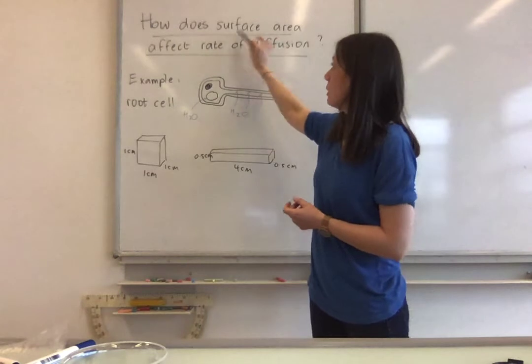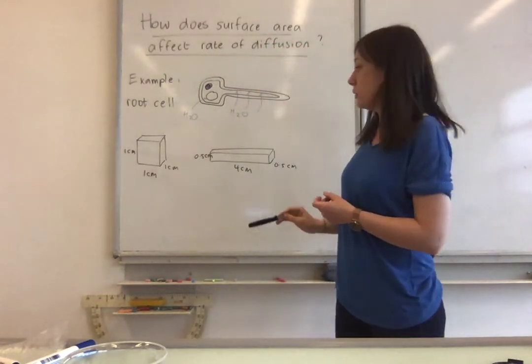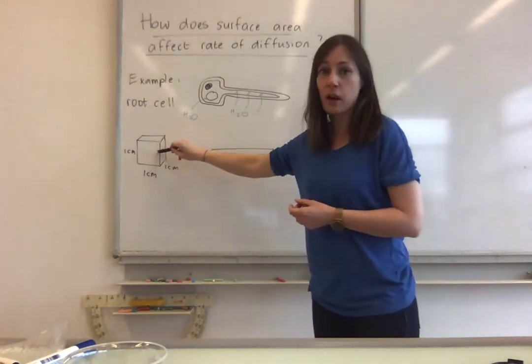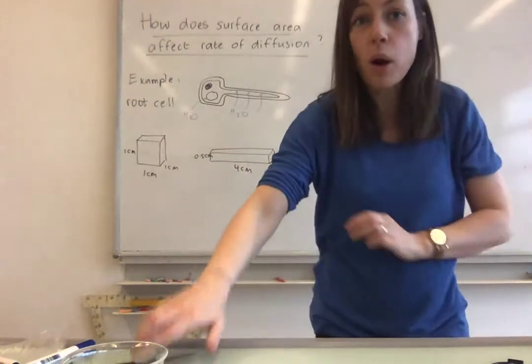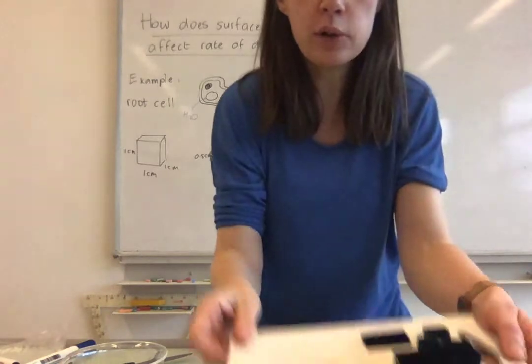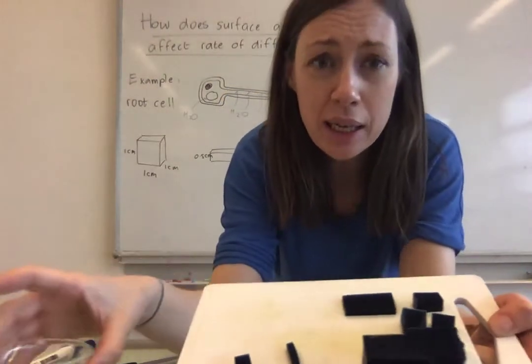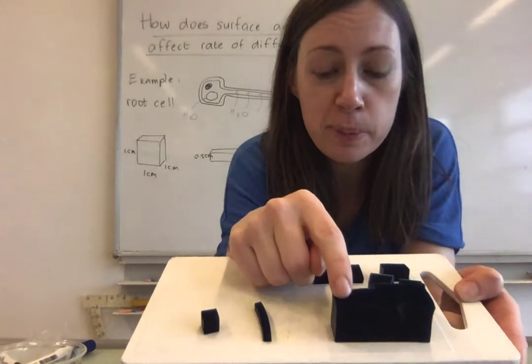So we're going to change the surface area in this experiment by using different shapes and we're going to measure the rate of diffusion. So firstly I'll explain what method we're going to use. We're going to use the special stuff called agar jelly and the agar jelly has been dyed blue, you can see that it's blue.